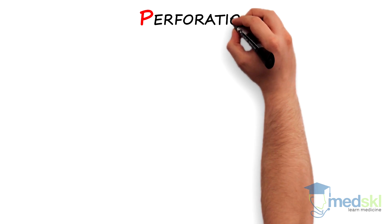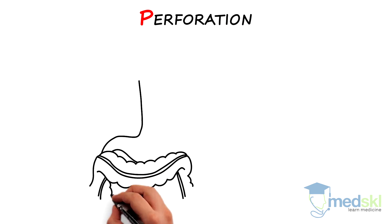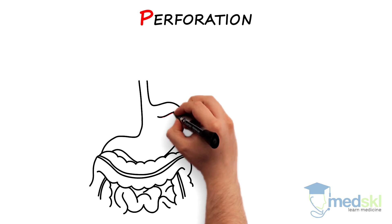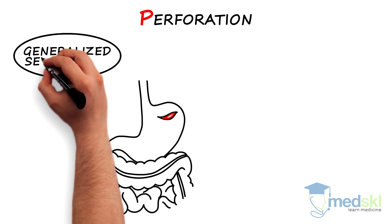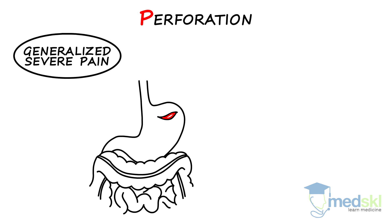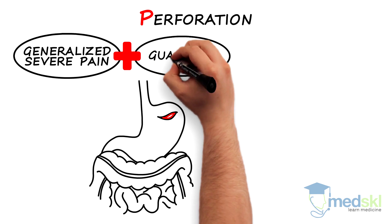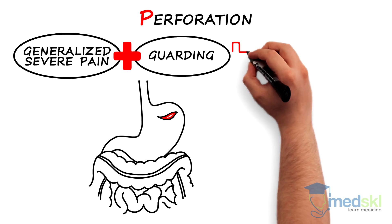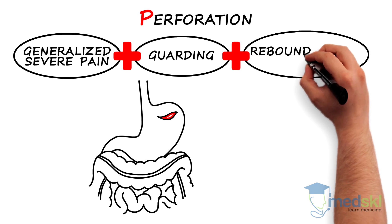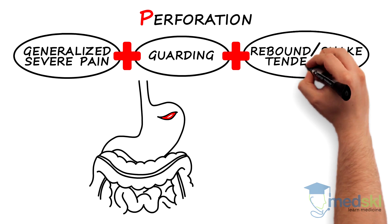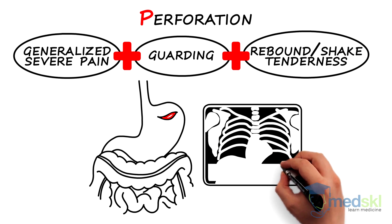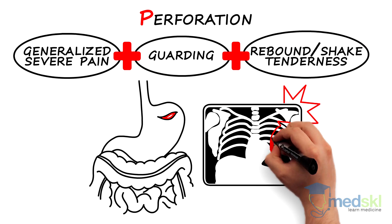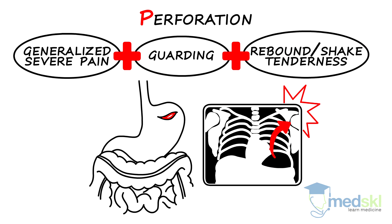P is for perforation. Non-traumatic bowel perforations generally present with a sudden onset of generalized severe pain and an acute abdomen with generalized guarding, rebound and shake tenderness. Shoulder tip pain may indicate sub-diaphragmatic air.